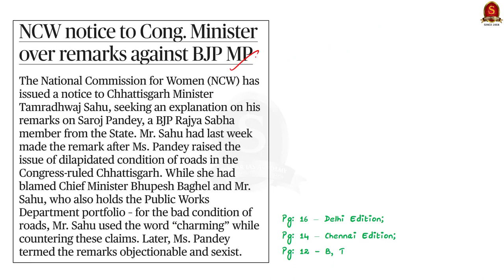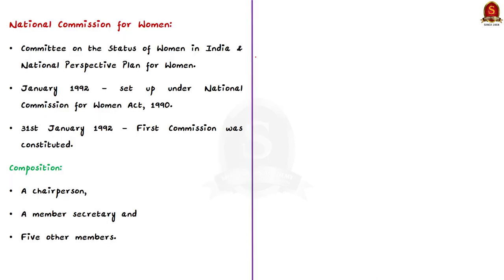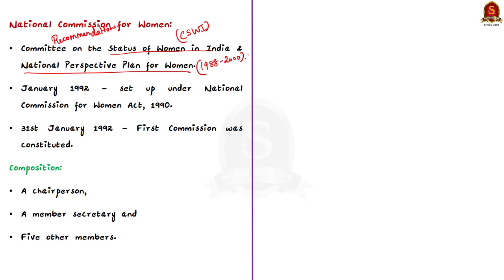This news article talks about a notice issued to a Chhattisgarh minister by the National Commission for Women. Let us learn about the National Commission for Women. Nearly five decades ago, the Committee on the Status of Women in India recommended setting up a National Commission for Women, believing it would facilitate redressal of grievances and accelerate the socio-economic development of women. Successive committees including the National Perspective Plan for Women 1988–2000 also recommended an apex body for women. The National Commission for Women was set up as a statutory body in January 1992 under the National Commission for Women Act 1990.